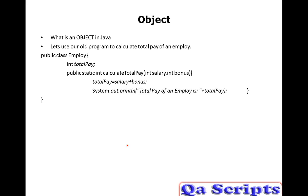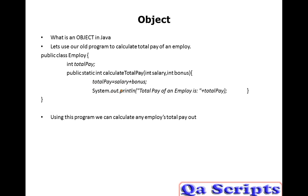Here is the program. In this program we have one method called calculateTotalPay. We are passing salary and bonus as parameters for this method. Inside the method we are calculating by adding salary and bonus and storing the result into another variable that is totalPay. And here we are displaying that result using System.out.println. Using this particular program we can calculate any number of employees' total pay.